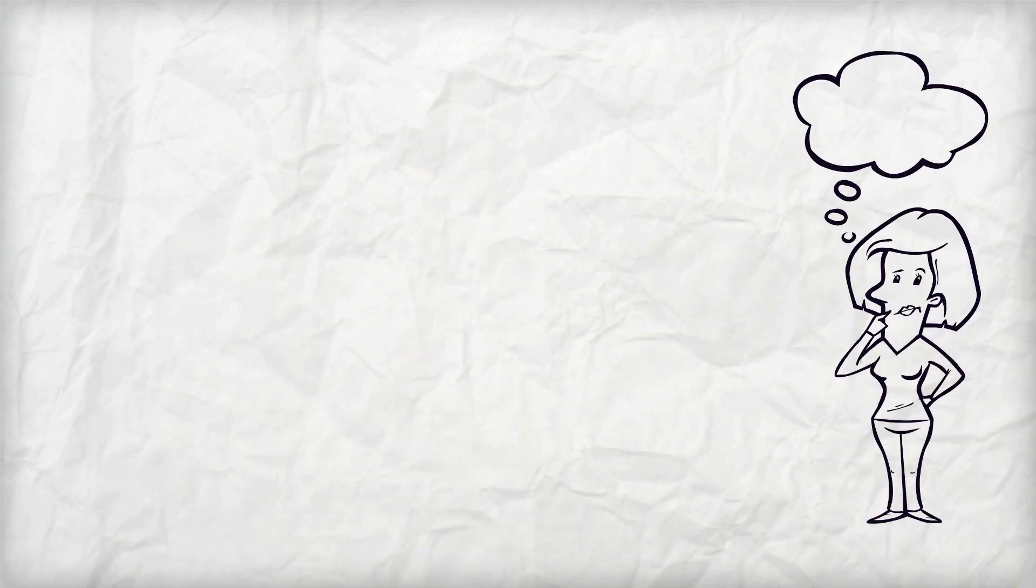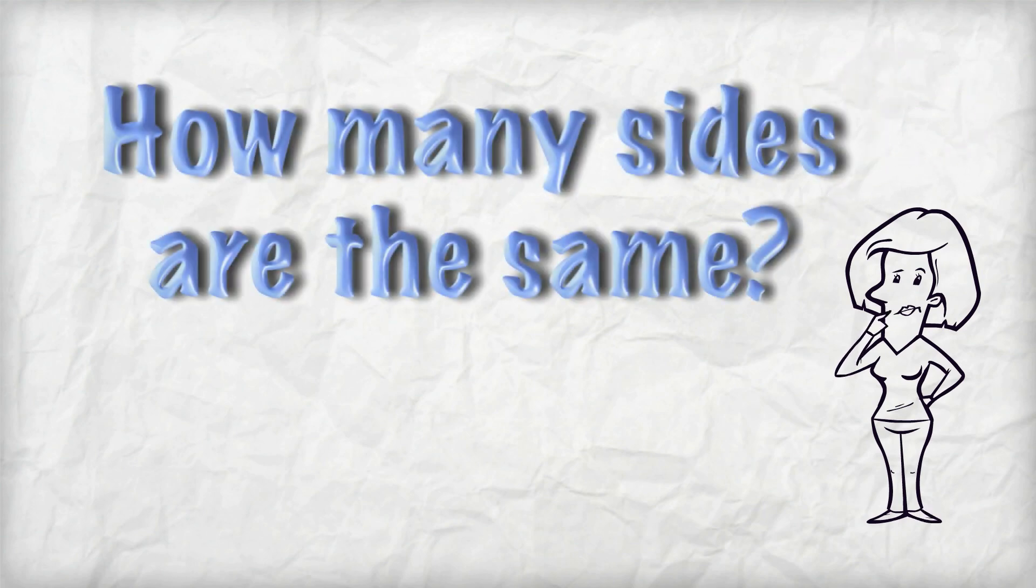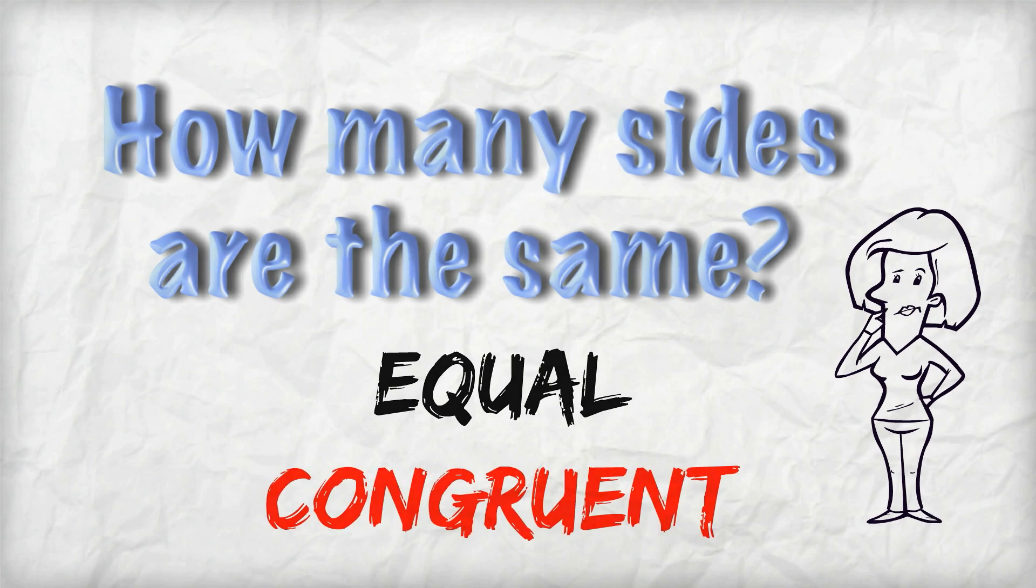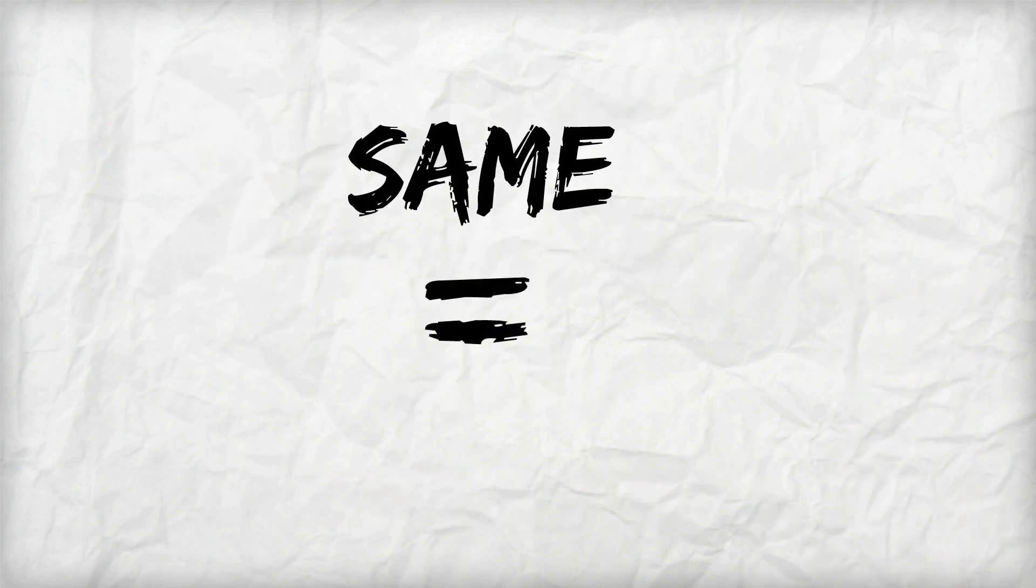When sorting triangles by side length, the big question mathematicians ask is: How many sides are the same or equal or congruent? When something is exactly the same in geometry, we use the word congruent.